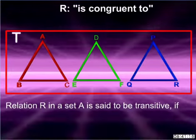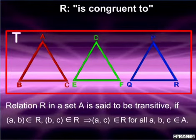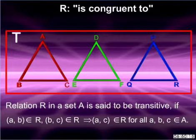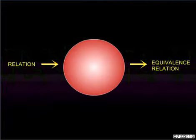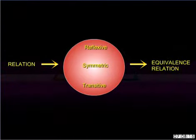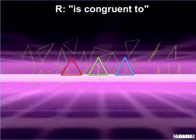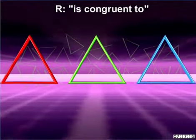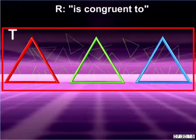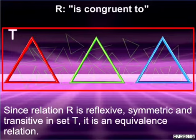A relation R in a set A is said to be transitive if A is related to B and B is related to C implies that A is related to C, for all A, B and C belonging to set A. A relation R in a set A is an equivalence relation if the relation R is reflexive, symmetric and transitive. For the same set T of triangles, since 'is congruent to' is reflexive, symmetric and transitive, therefore R is an equivalence relation.